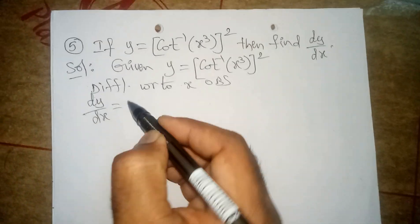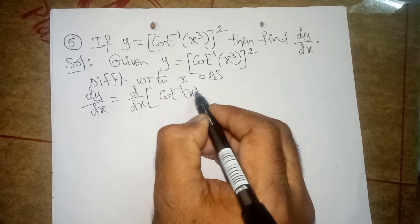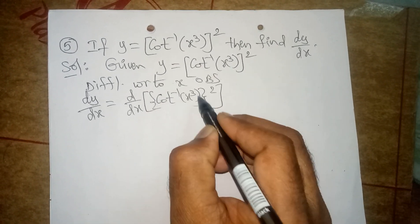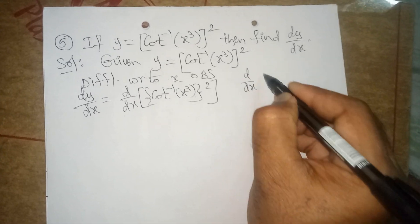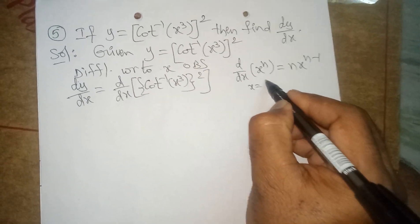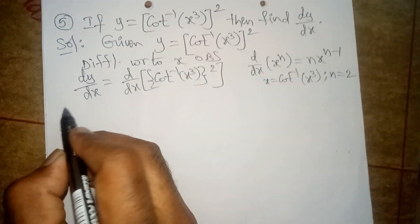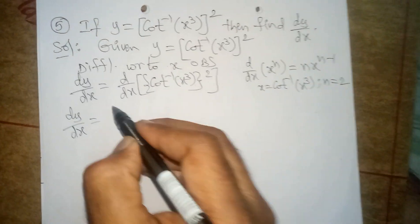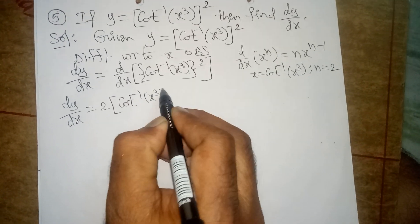Differentiating with respect to x on both sides, we get dy by dx is equal to d by dx of cot inverse x cube, whole square. The complete inside bracket — cot inverse x cube — looks like x, and power n is 2. So here I am writing the formula: d by dx of x power n is equal to n into x power n minus 1. Here x is equal to cot inverse x cube, and n is equal to 2.